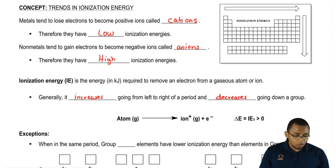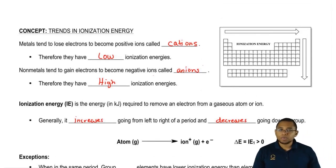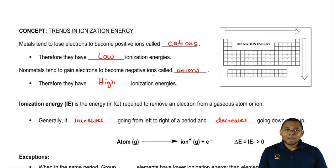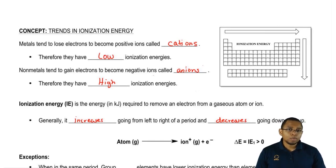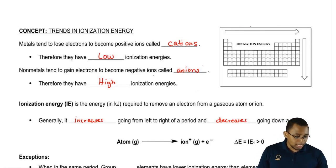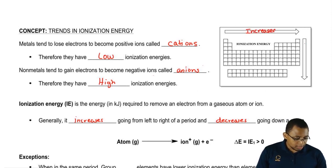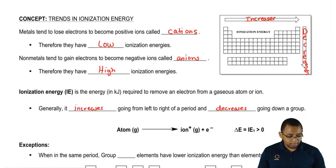It decreases going down a group because as you go down any group, you become more like a metal. Metals like to lose electrons very easily, so there's not much energy required to remove them. If we see this little box here, it increases going this way and decreases going this way. Just remember that trend.